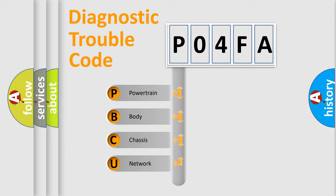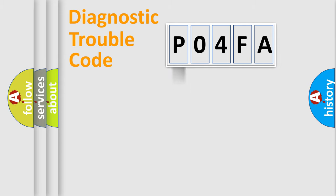We divide the electric system of automobile into four basic units: Powertrain, Body, Chassis, and Network.